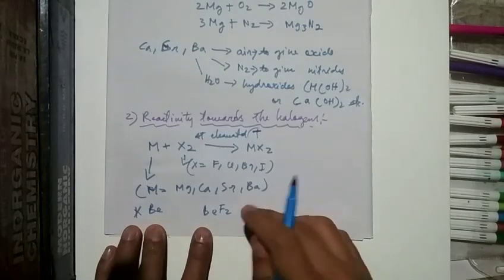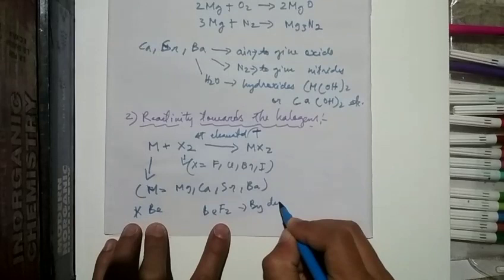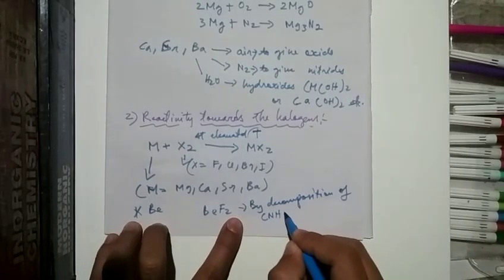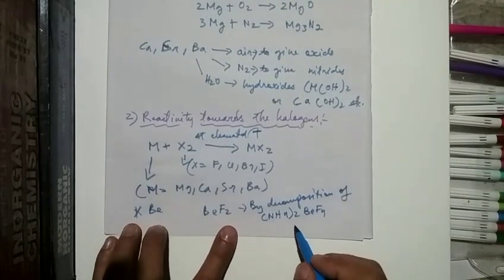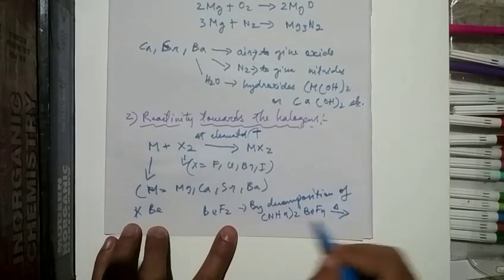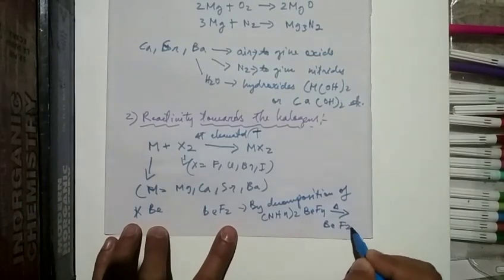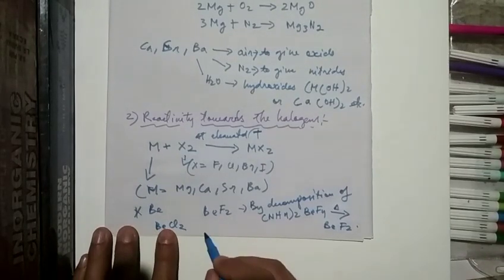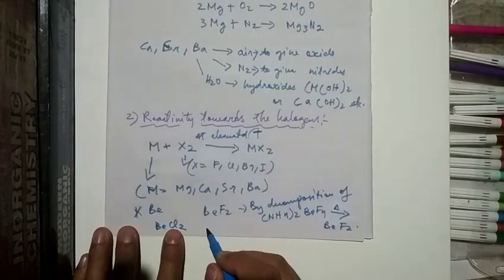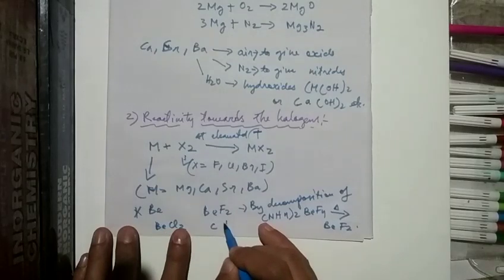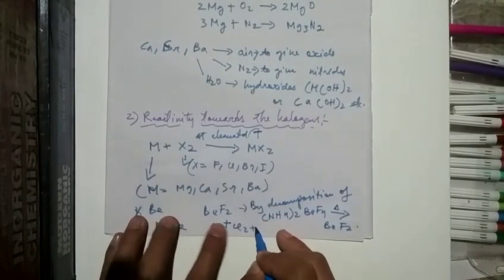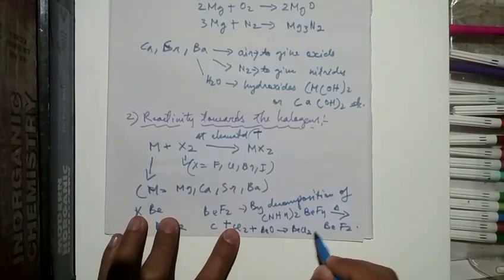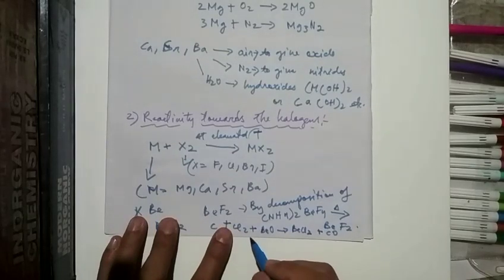BeF₂ can be prepared by decomposition of (NH₄)₂BeF₄ — decomposing this gives BeF₂. Another method is for preparation of BeCl₂: BeO + C + Cl₂ gives BeCl₂ + CO.